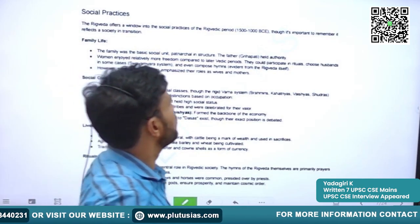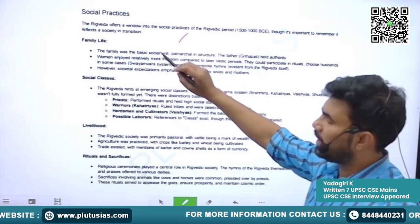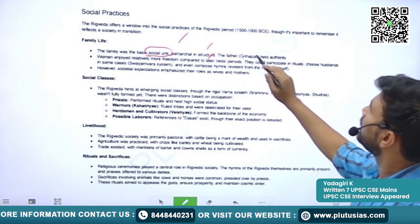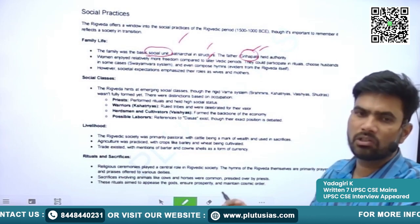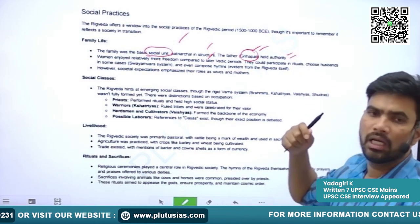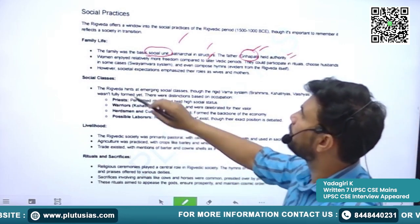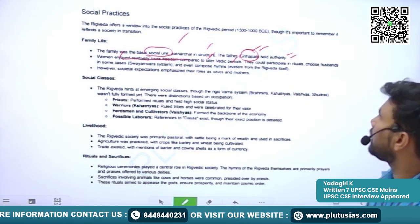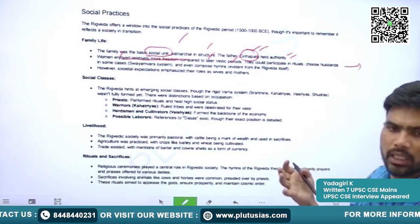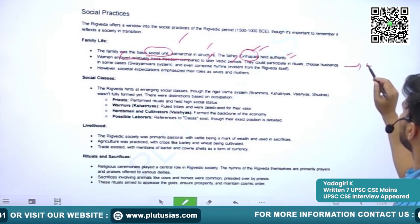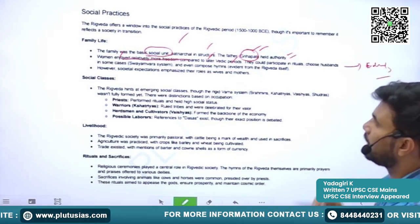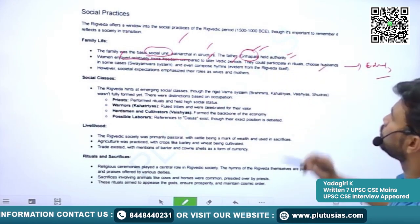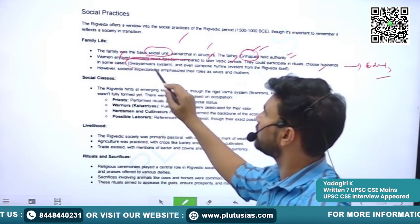Looking at social practices, the family was the basic social unit with a patriarchal structure. The father — called the Grihapati — remained the authority of the family. In the earlier Vedic period, women enjoyed relatively more freedom compared to the Later Vedic Period. Certain women are heard of who were well educated. They also chose husbands in some cases — the Swayamvara system existed.